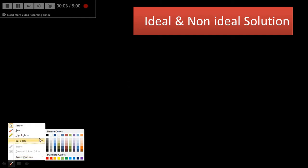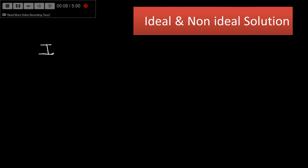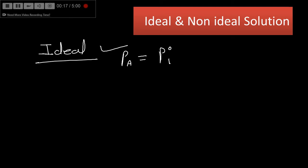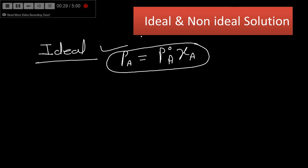Ideal and non-ideal solutions. There is Raoult's law. Ideal solutions follow Raoult's law, meaning the vapor pressure equals the product of the vapor pressure of the pure substance and its mole fraction in solution. If we calculate a solution's vapor pressure experimentally and also using Raoult's law and both values are the same, it is called an ideal solution. Ideal solutions follow Raoult's law over the entire range of temperature and pressure.